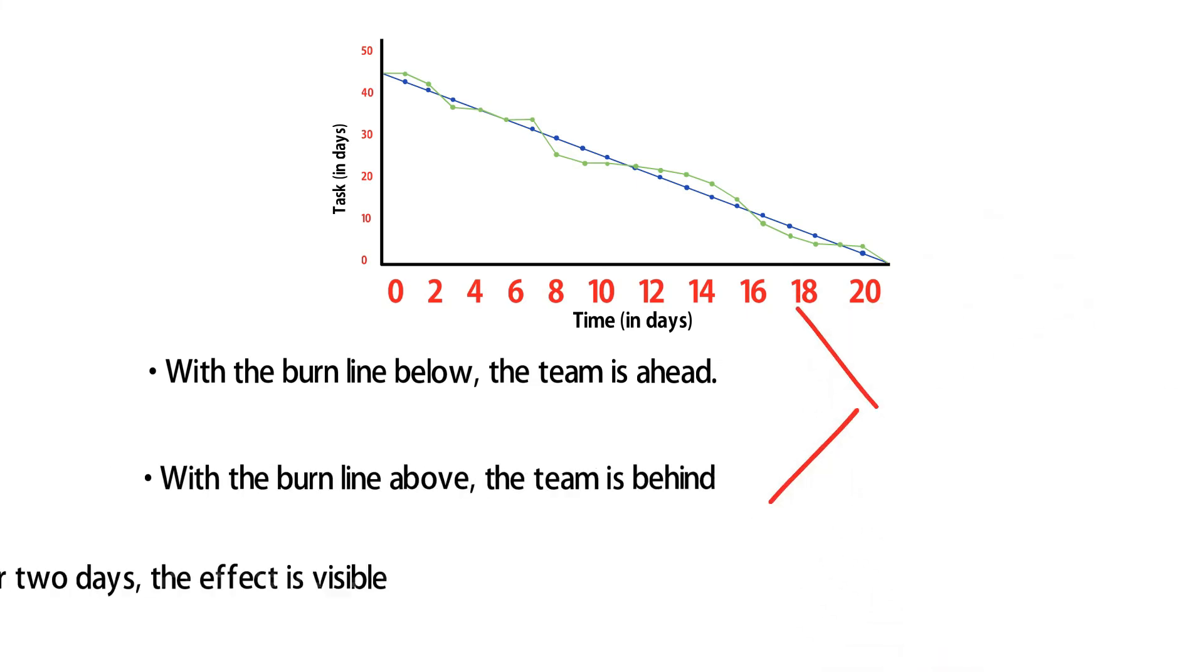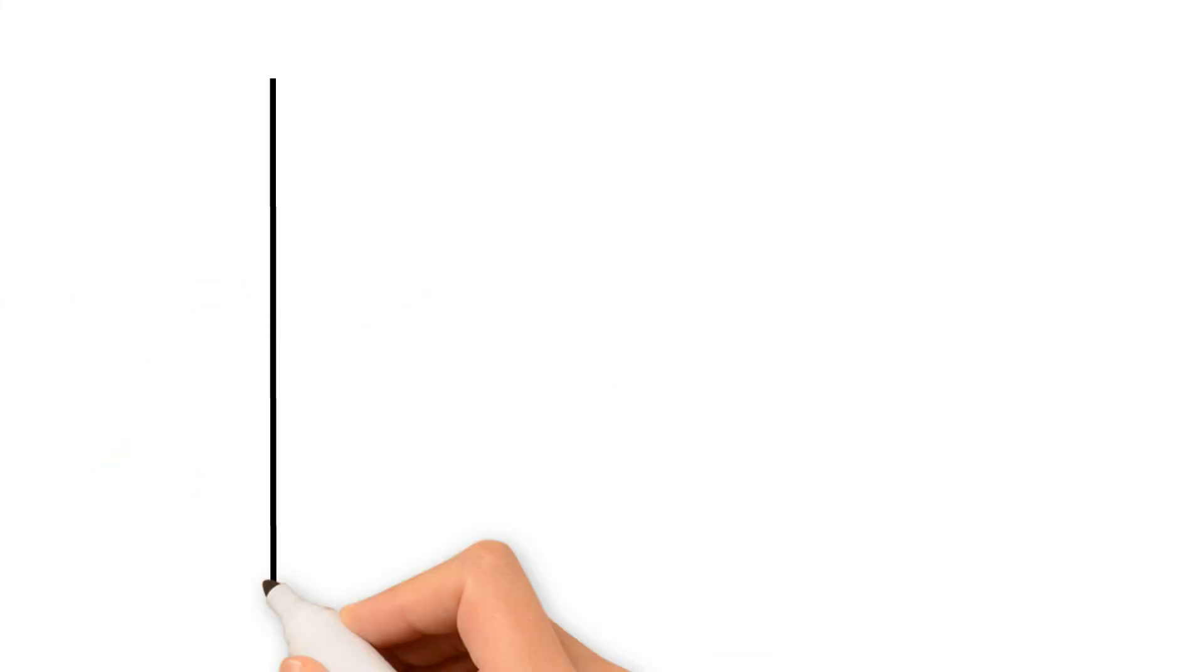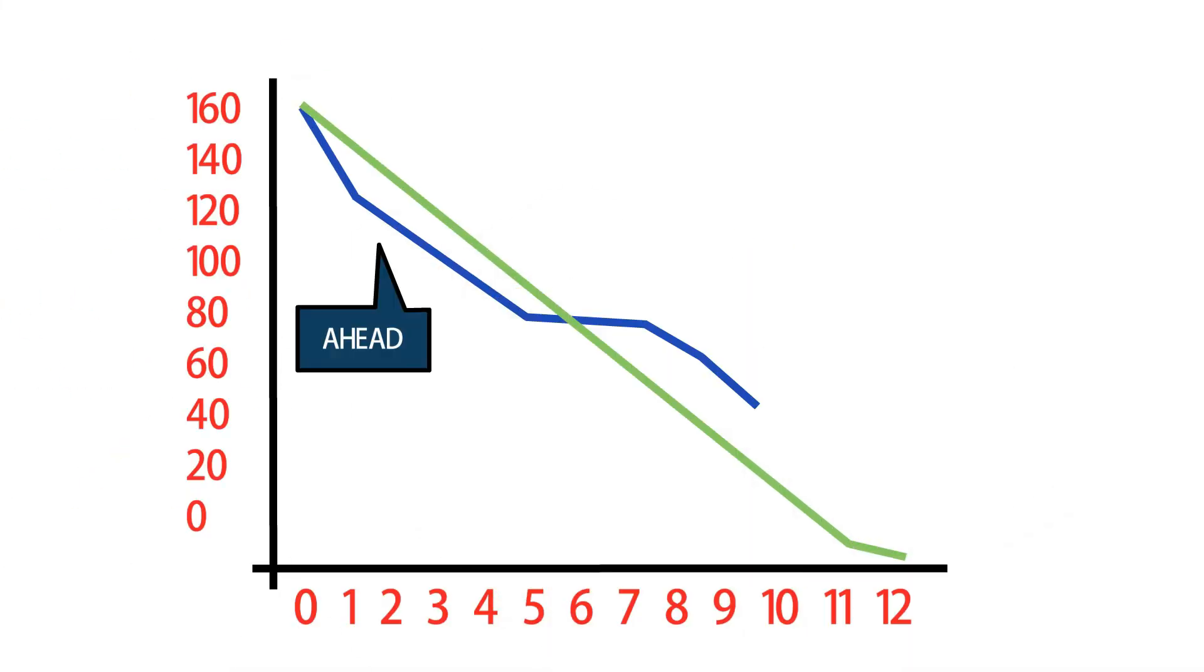With no progress after 2 days, the effect is visible. The team needs to get back on track. Either put in more effort or announce a delay in a few user stories' delivery.